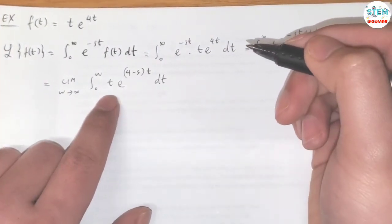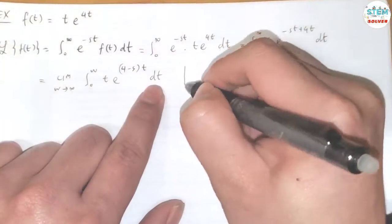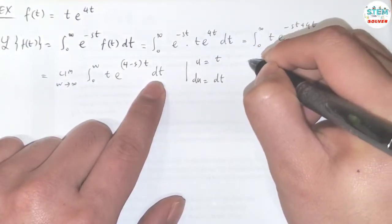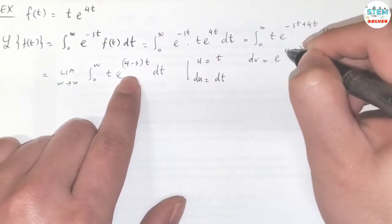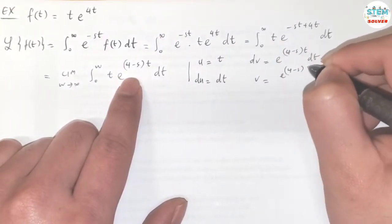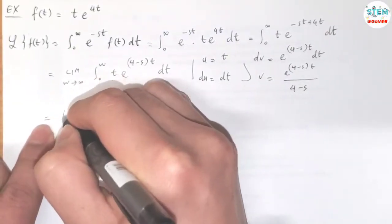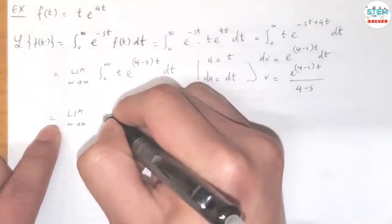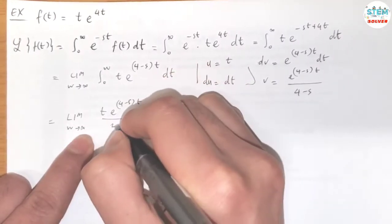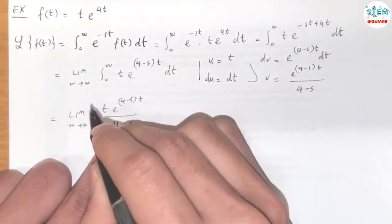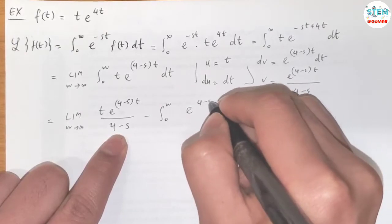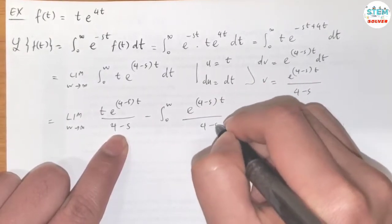Okay, so to integrate this, I'm going to integrate this by parts. So let u equal t, du equals dt. dv equals e to the 4 minus s times t dt. Then v equals e to the 4 minus s times t over 4 minus s. So this will become t times e to the 4 minus s times t over 4 minus s minus the integral from 0 to w e to the 4 minus s times t over 4 minus s dt.